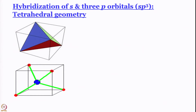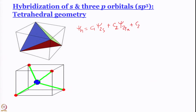Since we want 4 hybrid orbitals, all 3 p orbitals have to participate. To start, we consider that all 3 p orbitals make equal contribution to each hybrid orbital. Our expression will be: ψ_hybrid = c1·ψ_2s + c2·ψ_2px + c2·ψ_2py + c2·ψ_2pz. I will show you the final result in a neat form.